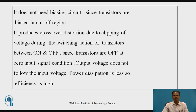In Class B Power Amplifiers, a biasing circuit is not connected since transistors are biased in the cut-off region. So in Class B Power Amplifiers, a distortion is produced called crossover distortion. It produces crossover distortion due to clipping of the input voltage signal during the switching action of the transistors between ON and OFF.